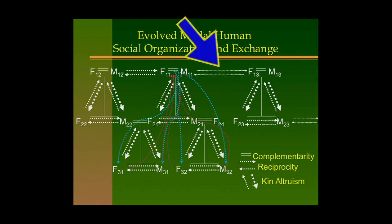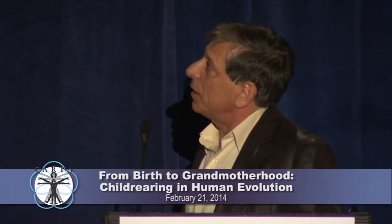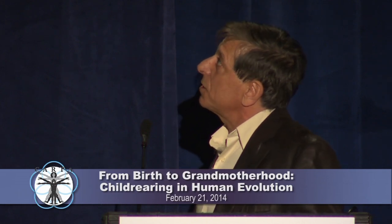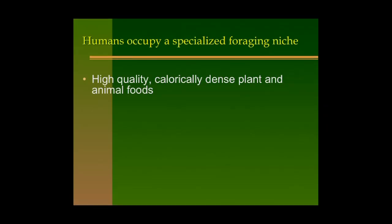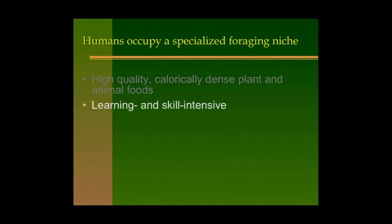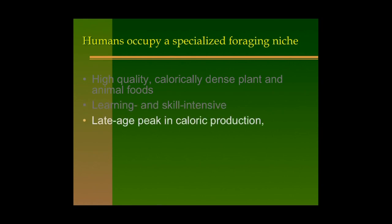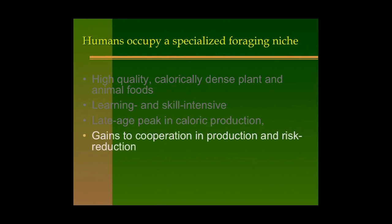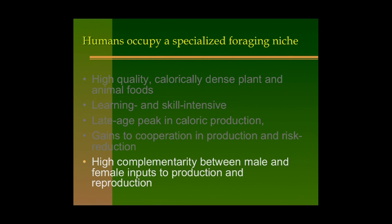These relationships characterize reciprocity: I give you today, you give me tomorrow, or we share in the products of our labor. This economy evolved in relation to the specialized foraging niche—humans eat high-quality, calorically dense plant and animal foods. It's a learning-intensive, skill-intensive foraging strategy with a late-age peak in caloric production, gains to cooperation, and high complementarity between male and female inputs into production and reproduction.